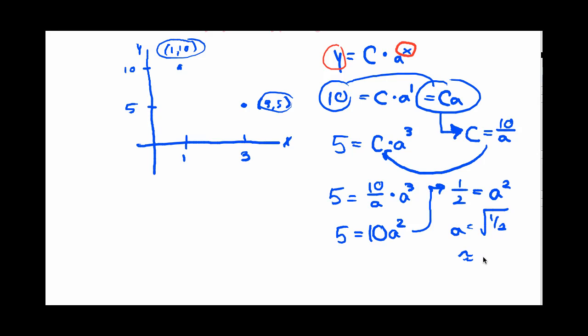That's about equal to 0.7071 if you're keeping score. So now I know what a is, and that means I can go back up here and figure out what C is. If a is equal to this, then let me put this down below.